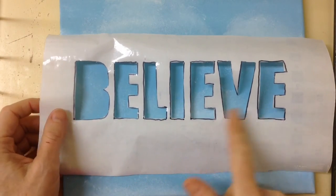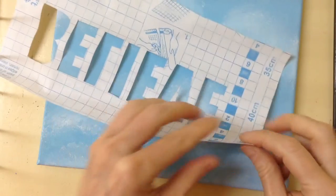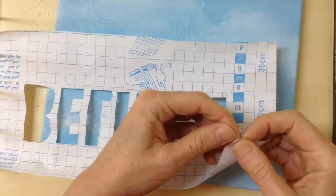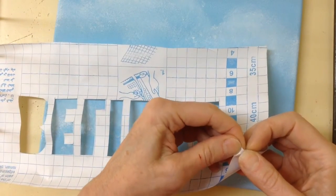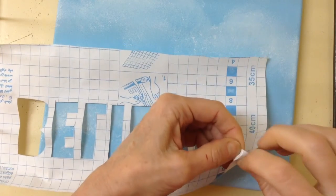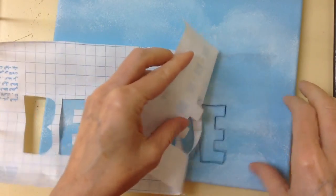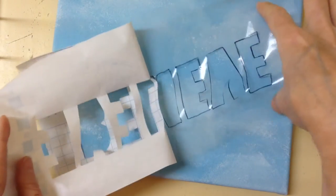So now I've cut out all of my pieces and what I have to do is very carefully take the backing off the MacTac and center it on my canvas. And you want to make sure that the canvas is very dry otherwise it's going to peel off the paint. So now I'm going to very carefully remove the backing off the MacTac.